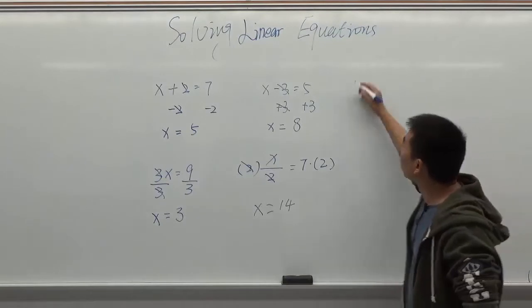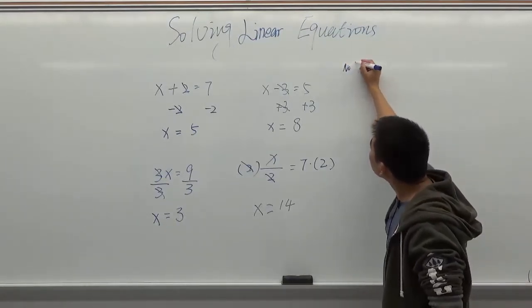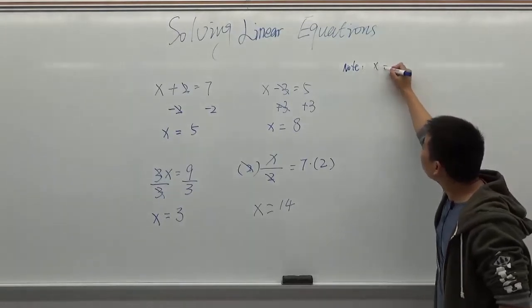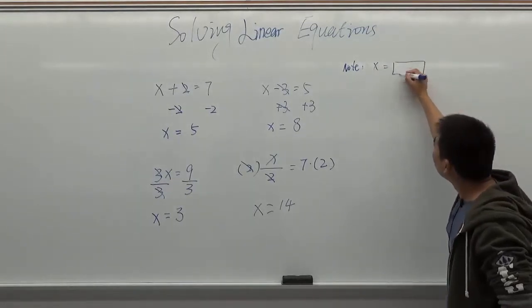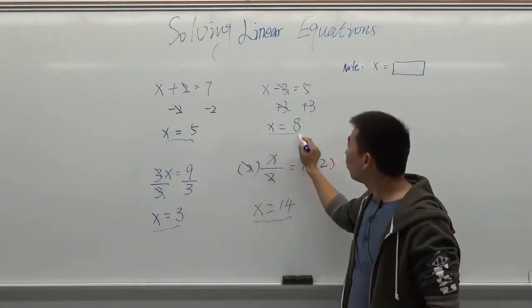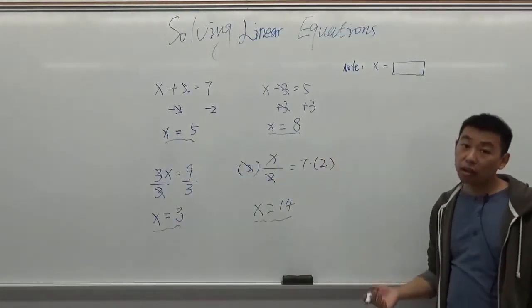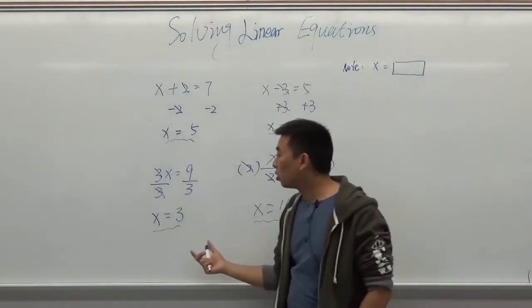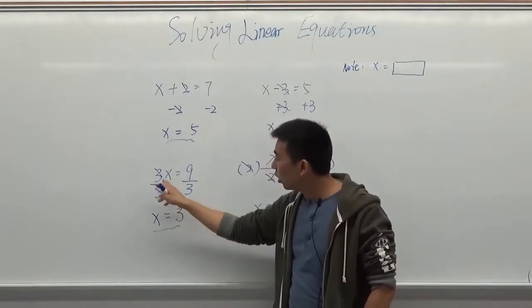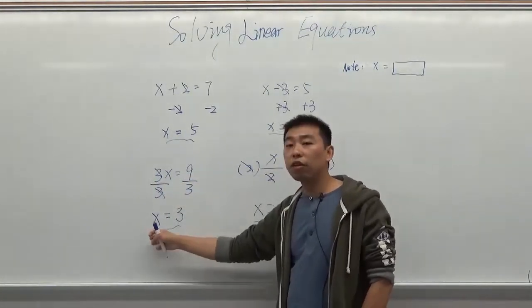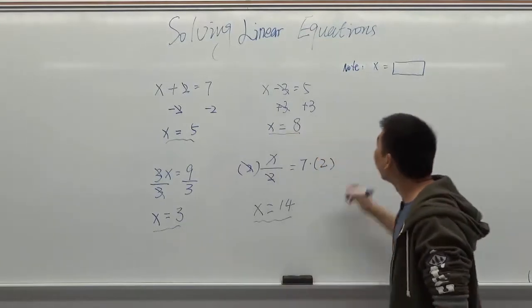And also there are some notes you need to know. First one, your result should be x equals a number. As you can see here, always x equals a number. If your result, after you solve it, is not x equals a number, like here, if you're in the middle of your work, it's 3x equals 9, that's not your final result. You should keep working on it until you have the final result, x equals a number. And the second one, note 2.